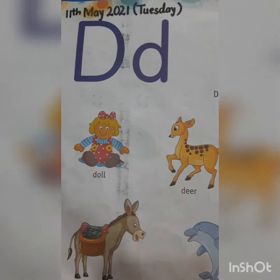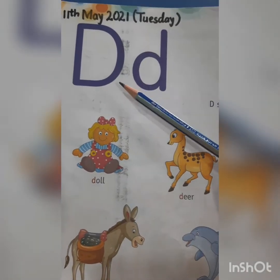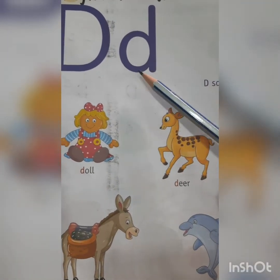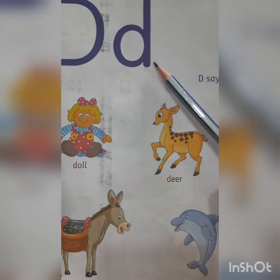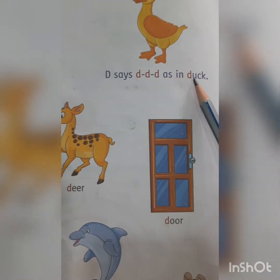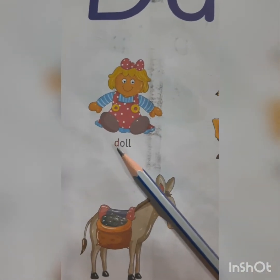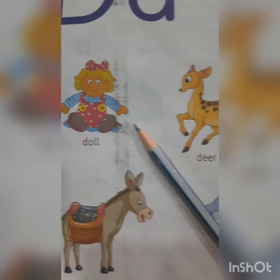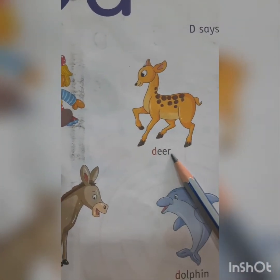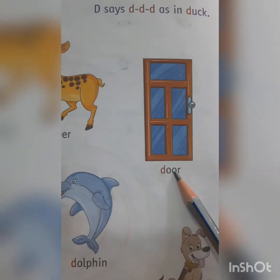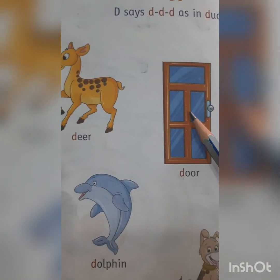Let's see the next letter. This is letter D. Capital D. Small d. What is the sound of letter D? It is 'D' in duck. D-U-C-K. Duck. Recognize the letters. D-O-L-L. Doll. D-E-E-R. Deer. D-O-O-R. Door.